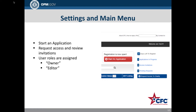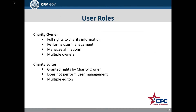These requests and invitations are used to gain access, which, when granted, allows the charity owner or system administrator to assign the role of owner or editor. Charity owners can invite users to create an account associated with their charity or federation. A charity owner has rights to fully administer a charity and its information and applications. In addition to managing charity information and applications, the charity owner performs user management by assigning user roles and managing affiliations by joining a federation or choosing to remain independent.